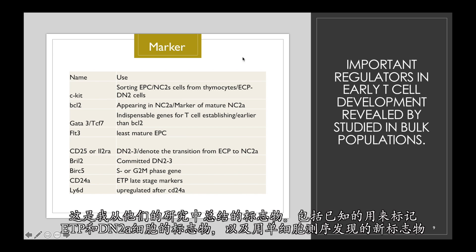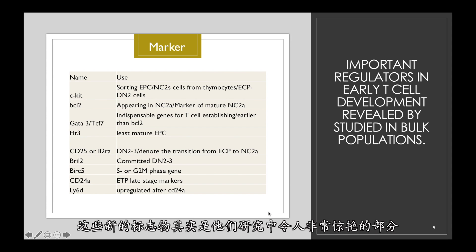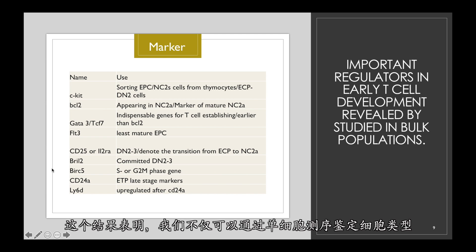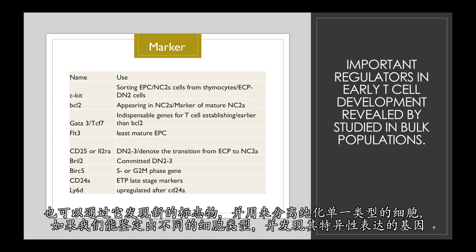Here are the markers summarized from their study, which were used to define the non-staged ETP and DN2A cells, along with novel markers identified through single cell sequencing. A very remarkable result they obtained indicates that beyond using single cell sequencing to identify different subgroups of the population, we can also find novel markers to isolate and purify populations by identifying clusters and finding genes unique to a given stage.